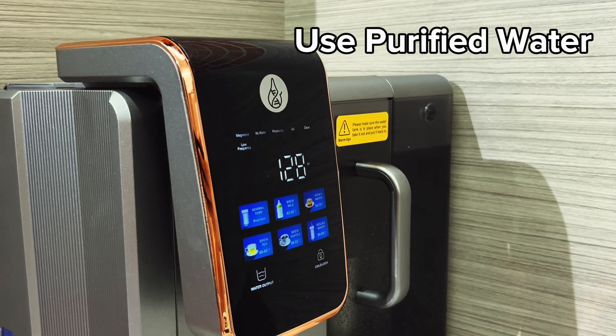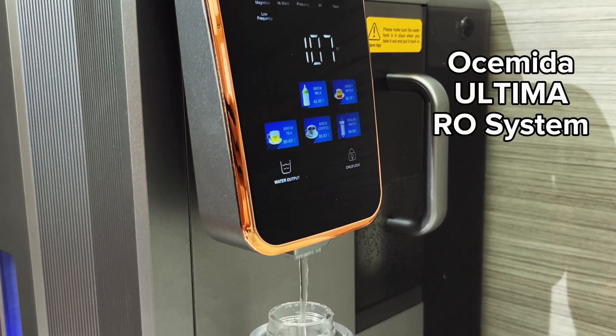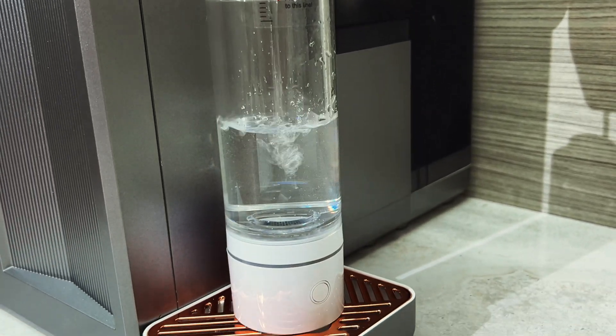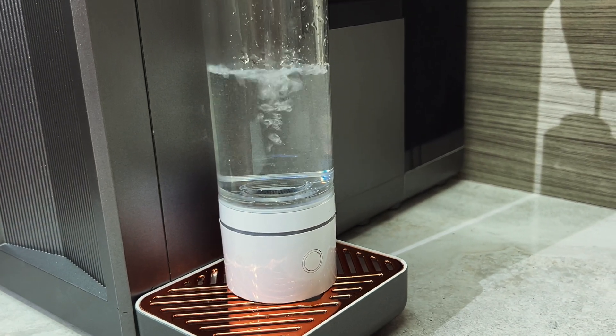But here's how you can help your Oshamita bottle reach its full potential. Use purified water. Tap water contains impurities that can wear down the PEM faster. Stick to filtered or distilled water to keep your bottle in tip-top shape.